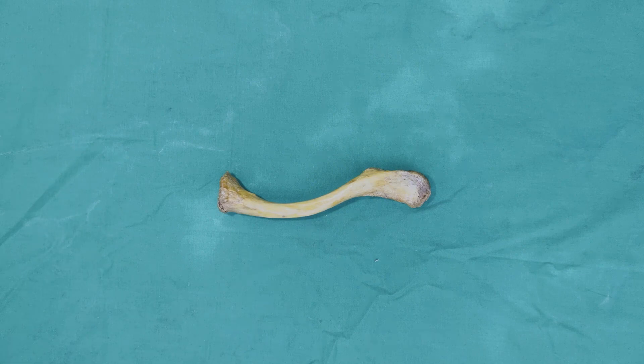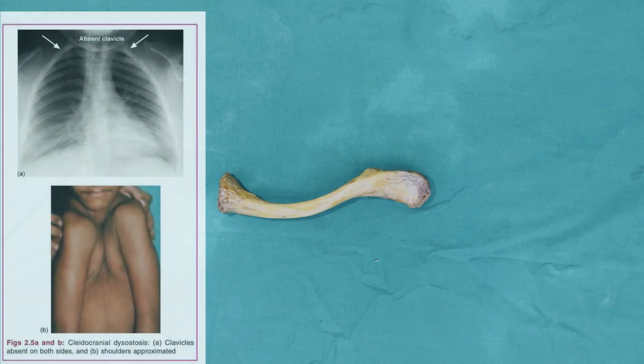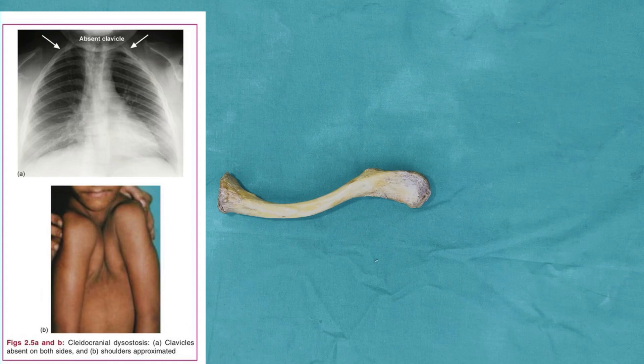In the congenital anomaly called cleidocranial dysostosis, children are born without the clavicles or with hypoplastic clavicles, as shown in the picture.